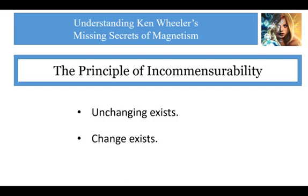Change and unchanging are incommensurate principles. If change exists, then unchanging must also exist, and vice versa. Change, being the incommensurate principle to resistance to change — or inertia, or stasis, or whatever you want to call it — must exist. As mainstream physics likes to blame everything on the uncertainty principle and relativity, I'm going to be blaming everything on the principle of incommensurability. If one thing or principle exists, then its incommensurate thing or principle must also exist. If space exists, and most people say it does, then its incommensurate principle counter space must also exist.